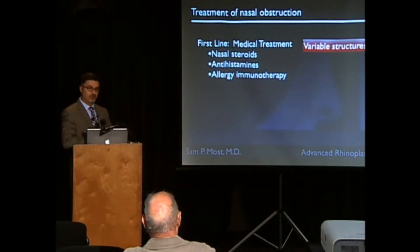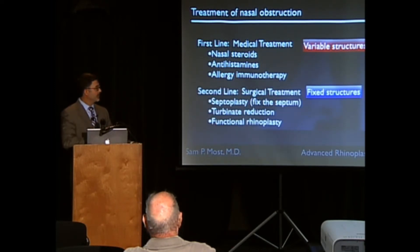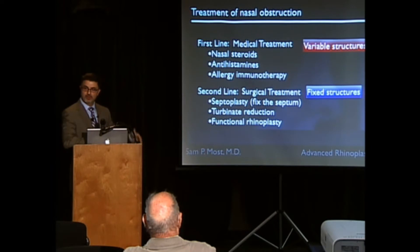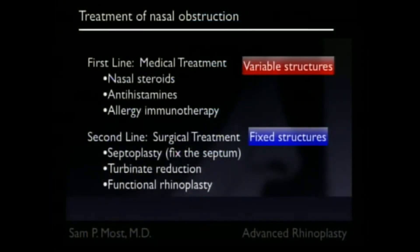Antihistamine therapy, now largely over-the-counter, is also used, and ultimately if allergies are an issue, immunotherapy. The second line would be treatment of the fixed structures. Patients who have failed medical treatment or have strong evidence for a fixed obstruction are not going to respond to medicines very well, and in this case there may be a surgical procedure — septoplasty or other types of functional rhinoplasty maneuvers — to alter the structure of the nose and improve airflow.